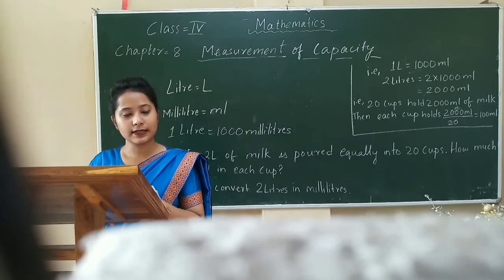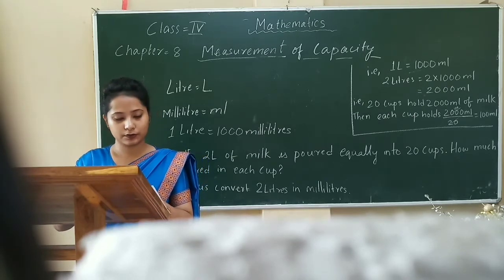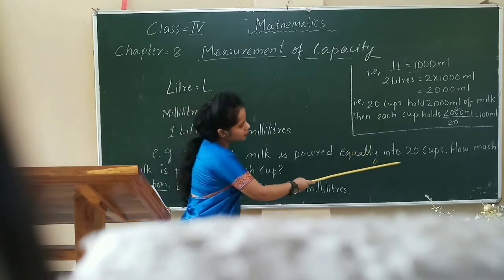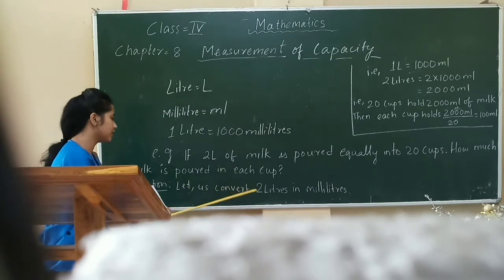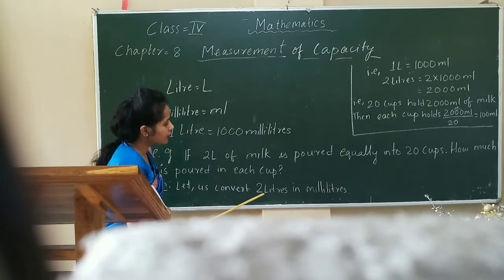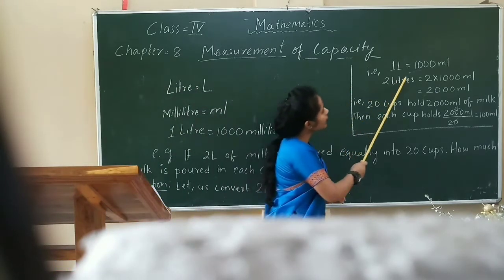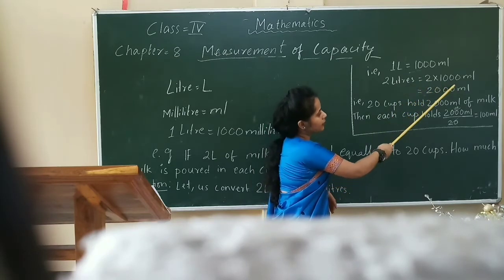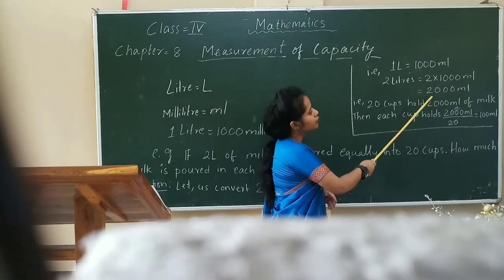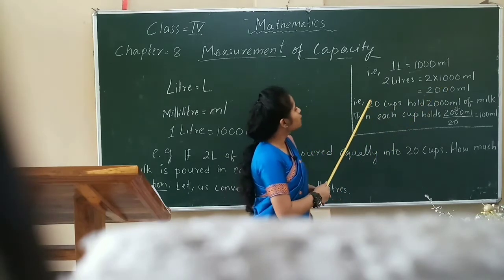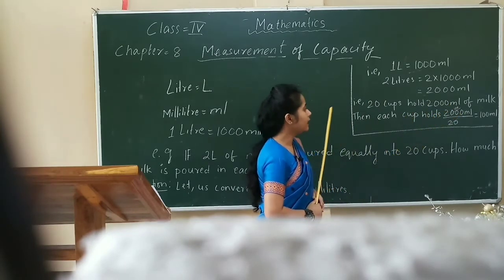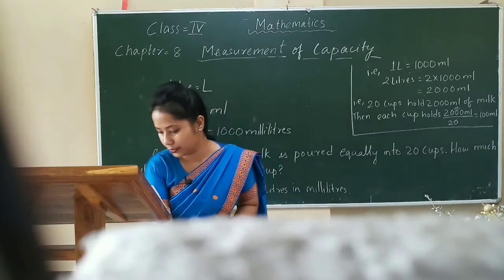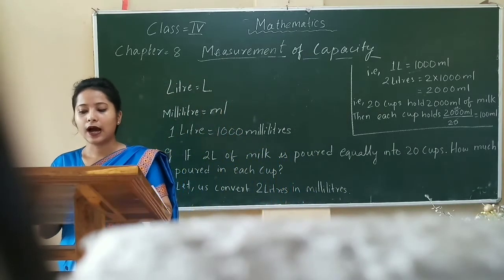Now let us see how to divide capacity by a whole number or quantity. Here is an example: if 2 liters of milk is poured equally into 20 cups, how much milk is poured in each cup? Here is the solution. Let us convert 2 liters into milliliters: 1 liter equals 1000 milliliters, so 2 liters equals 2000 milliliters. 20 cups hold 2000 milliliters of milk, that is 100 milliliters each. Therefore, each cup holds 100 milliliters of milk.